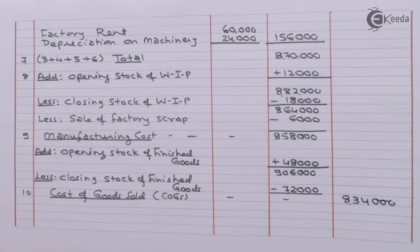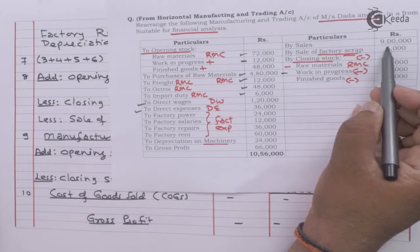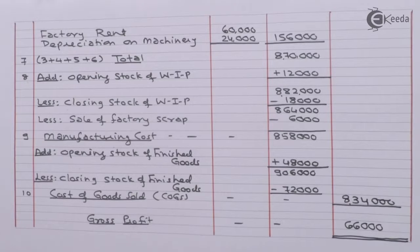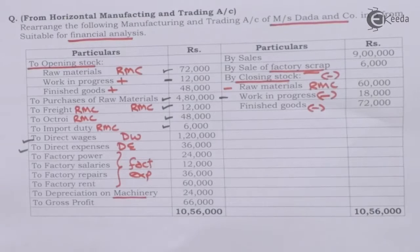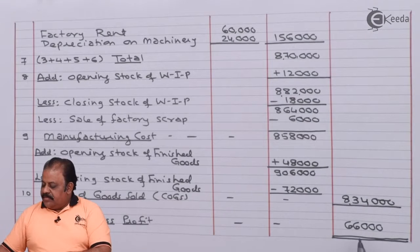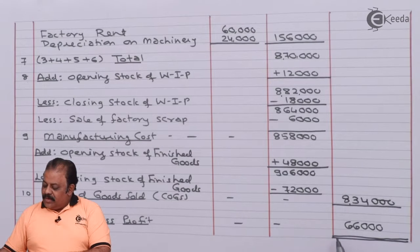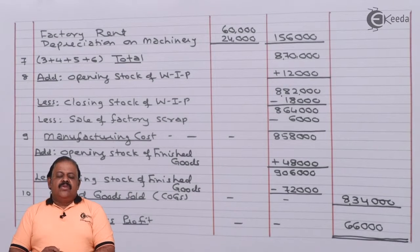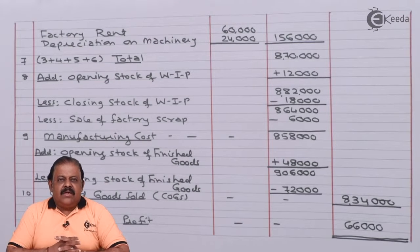This cost of goods sold is deducted from sales to arrive at gross profit. Sales is 9 lakhs, so gross profit is 66,000. In the horizontal trading account the gross profit is also 66,000, matching the figure from our vertical income statement. We have correctly converted the horizontal statement into the vertical statement.